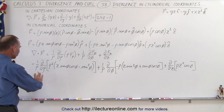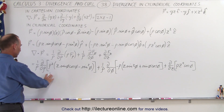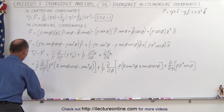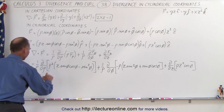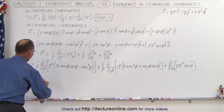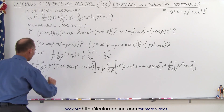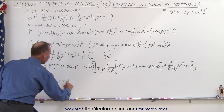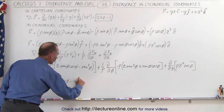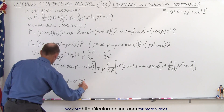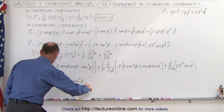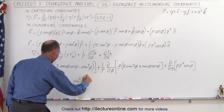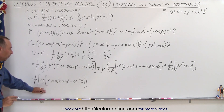Now taking the partial derivative of the first term with respect to rho, this becomes equal to 1 over rho times 2 rho times the quantity z sine of phi cosine of phi minus sine squared of phi. That's the first part.